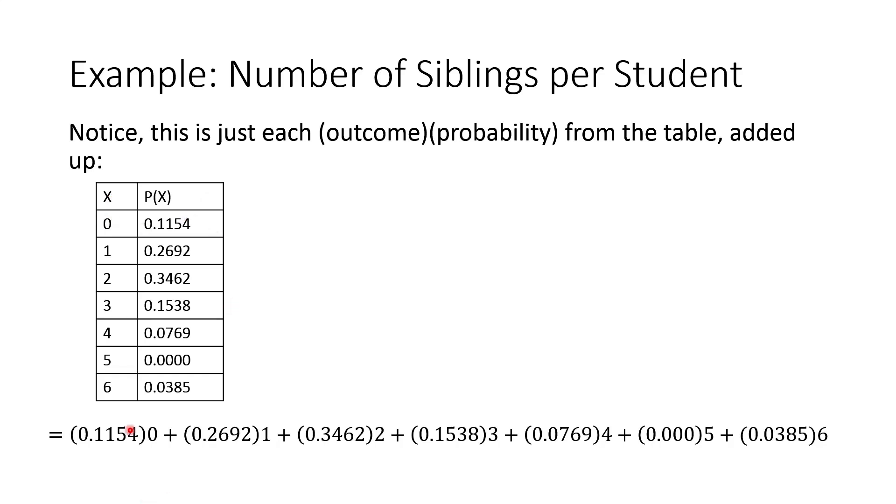So we have the probability of zero siblings times zero, we have the probability of one sibling times one, probability of two siblings times two, and so on and so forth. So to calculate the mean, it's almost like we can just take each outcome times its probability, outcome times probability, outcome times probability, and then just sum them all up.